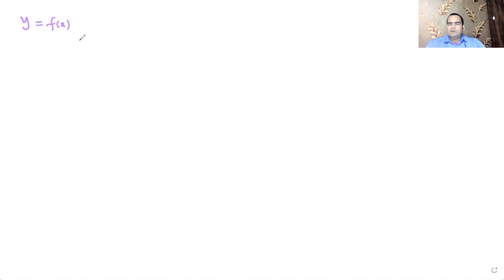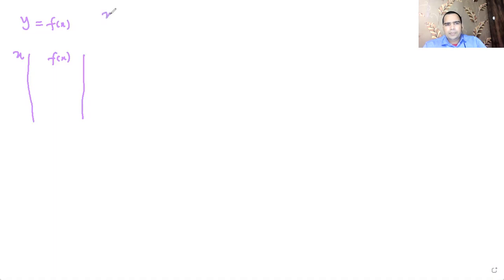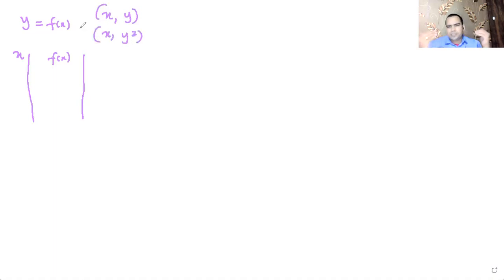you have x values and f of x values. In the squared function, the mapping in the original function is (x, y), but in the squared function it is (x, y²). For the same x values, your y values get squared.